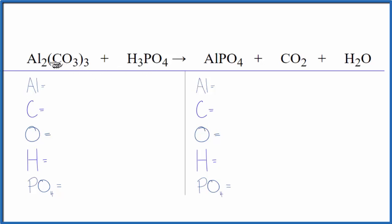So let's count the atoms up. We have two aluminum atoms. Then for carbon, we have three times the one, three of those. Oxygen, three times three, that gives us nine. Three hydrogen atoms.